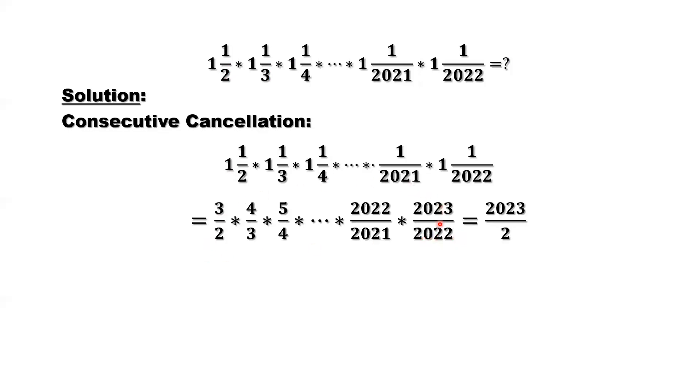Now, here, why is this? So here, let's mark it. So we call it consecutive cancellation. Consecutive, you can see 3 here. Do you see 3 here? Cancel.